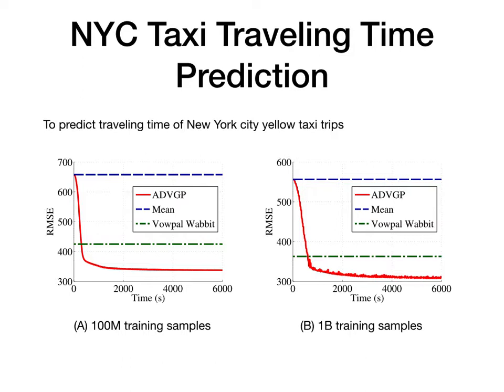Eventually, we tested ADVGP on a real-world problem with 1 billion training points. In this experiment, we trained on New York City taxi trip data over six years and tried to predict the traveling time on test data. We used 1,000 cores in total and compared ADVGP with a linear model implemented in widely used software, as well as the naive mean prediction as a baseline. We can see that ADVGP achieves a much better predictive result within one hour on this billion-point dataset.